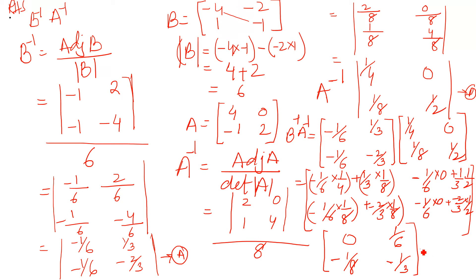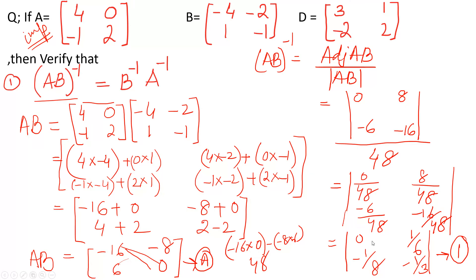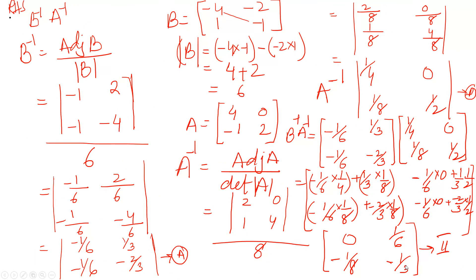Comparing: the left hand side is [0, 1/6; -1/8, -1/3] and the right hand side is also [0, 1/6; -1/8, -1/3]. They are equal — we have proved that AB whole inverse equals B inverse A inverse. It is a lengthy question; be very careful with negative signs and work neatly.